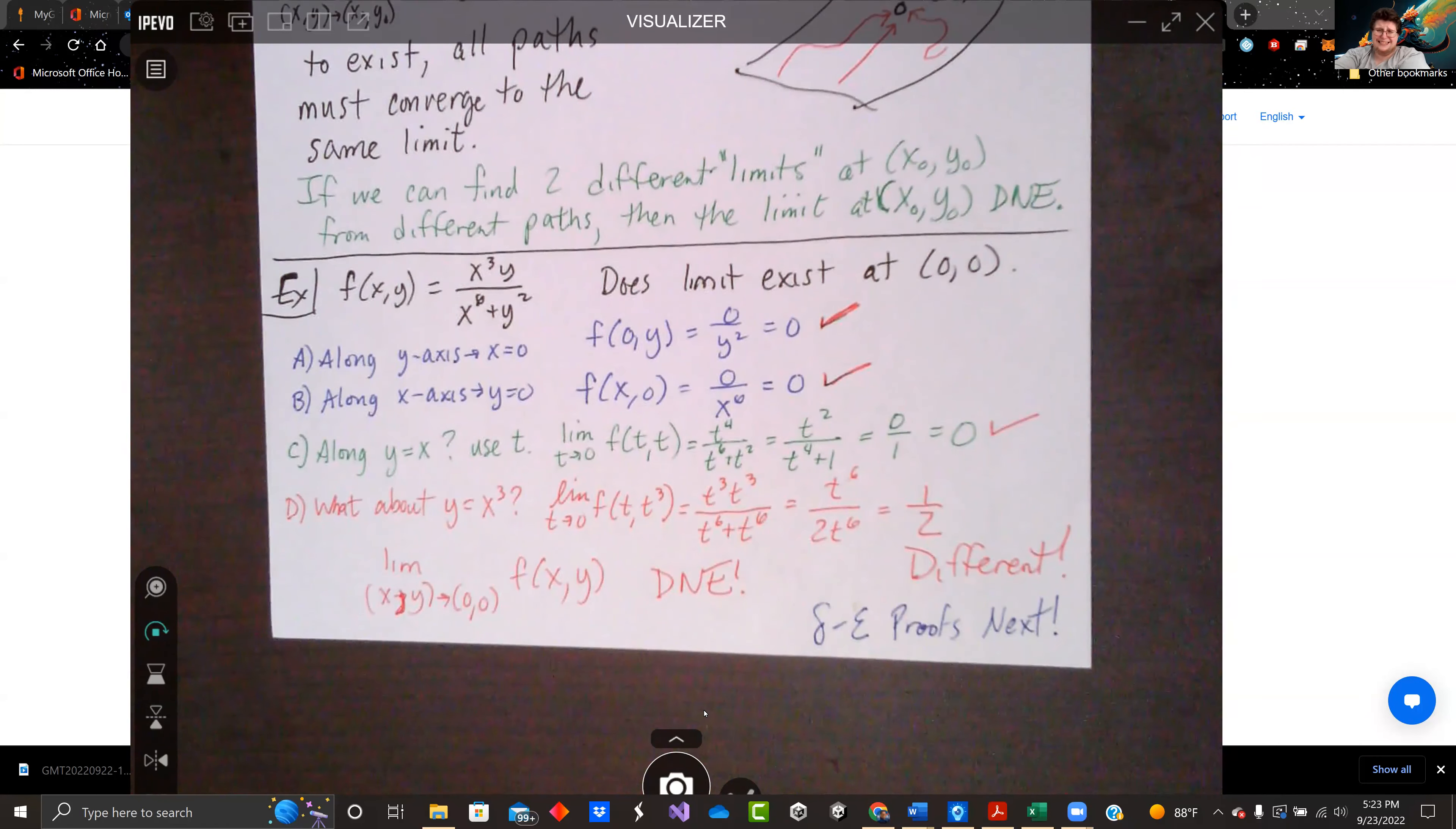So as you can imagine, doing something like this, the only way you're going to know if a limit exists is to actually prove one exists. We can't do it like this.